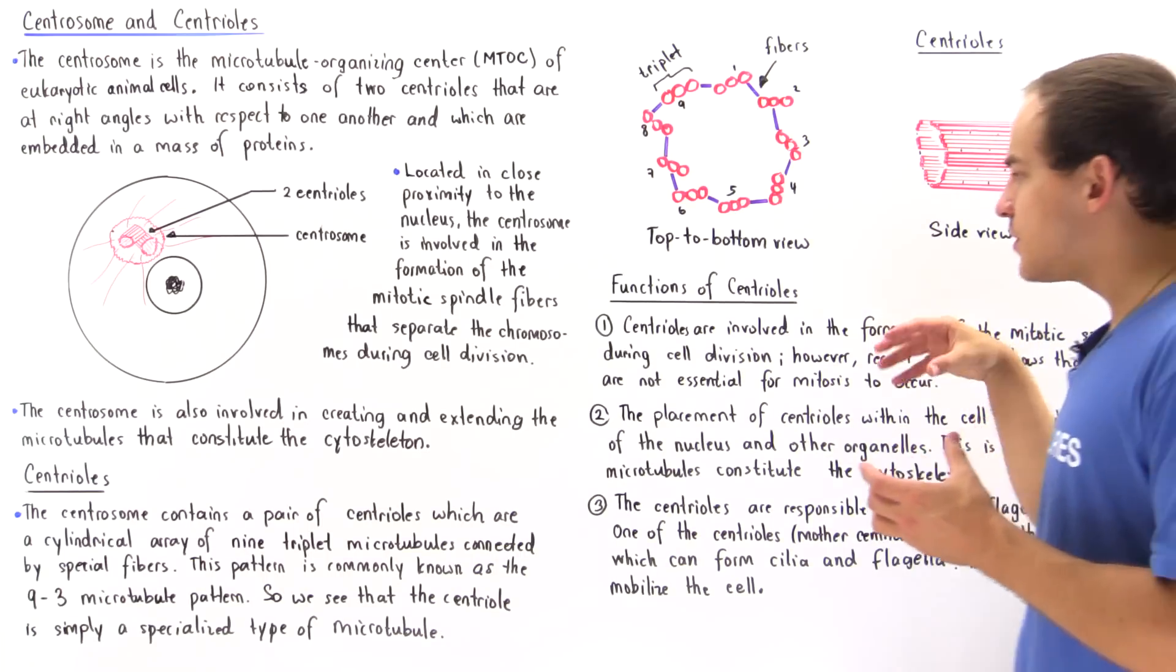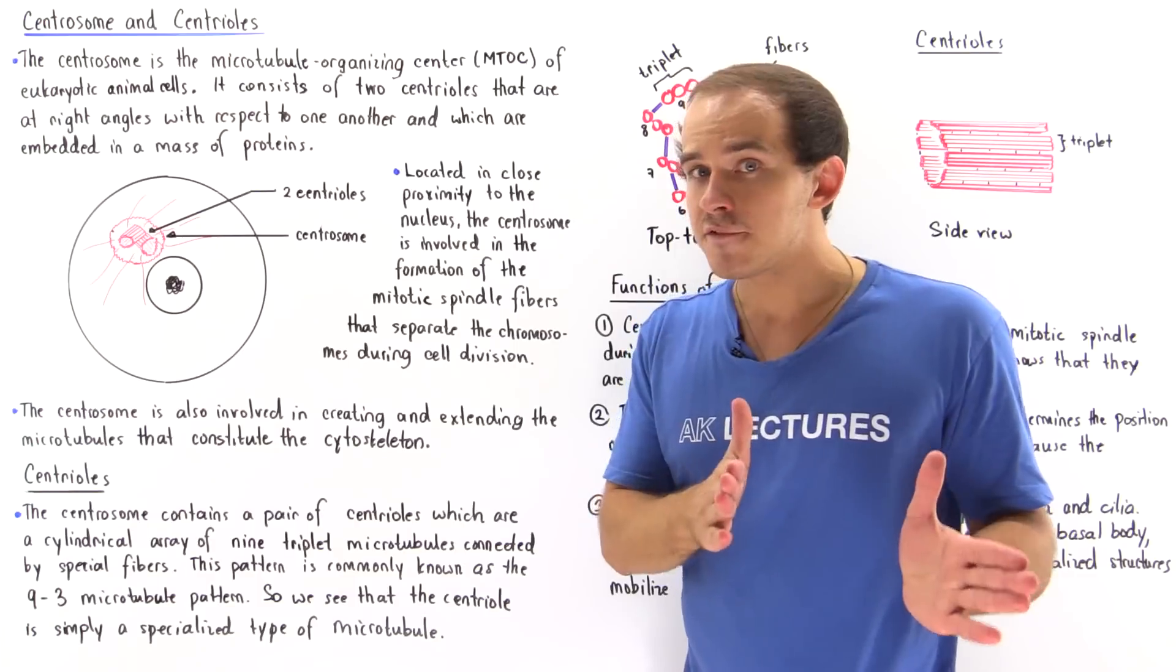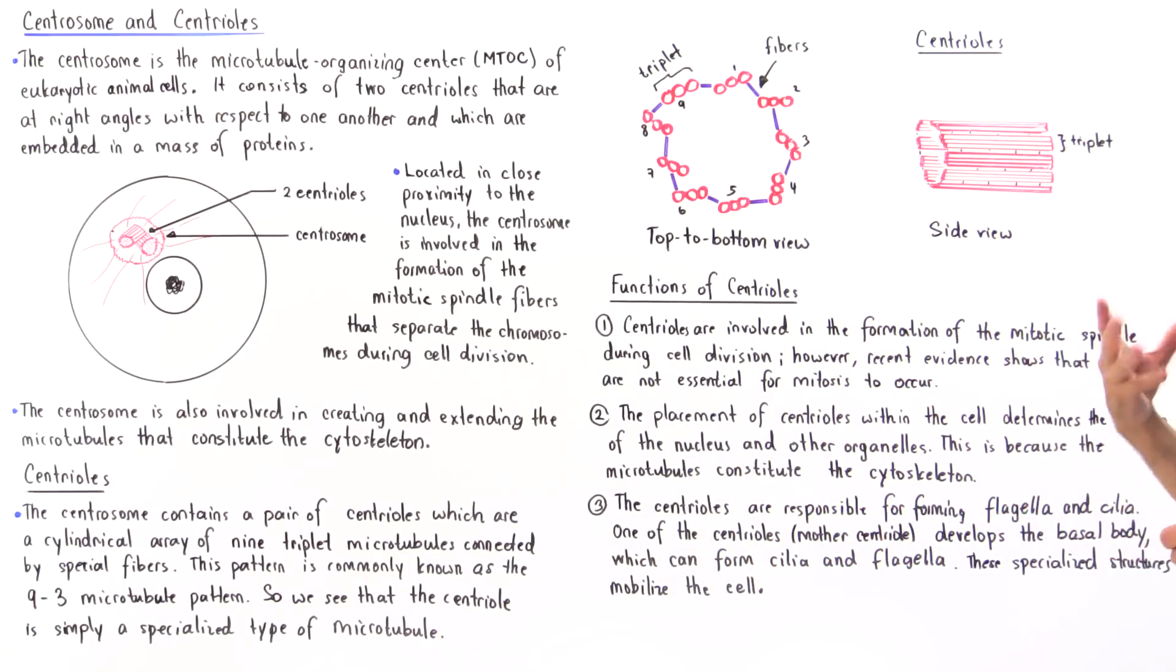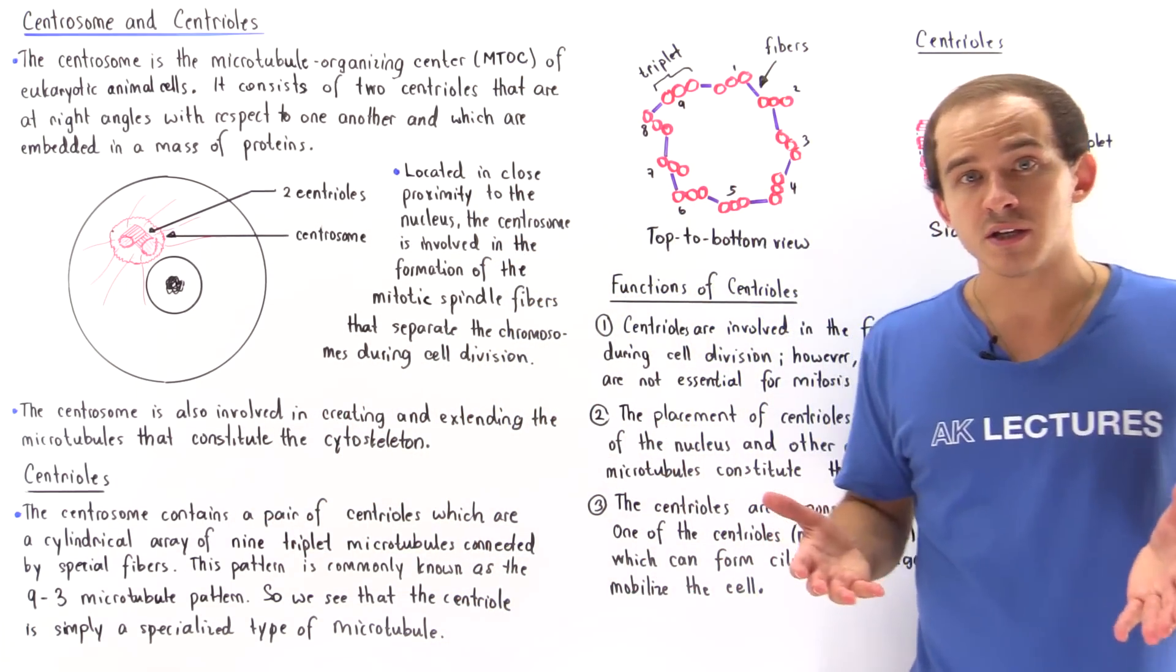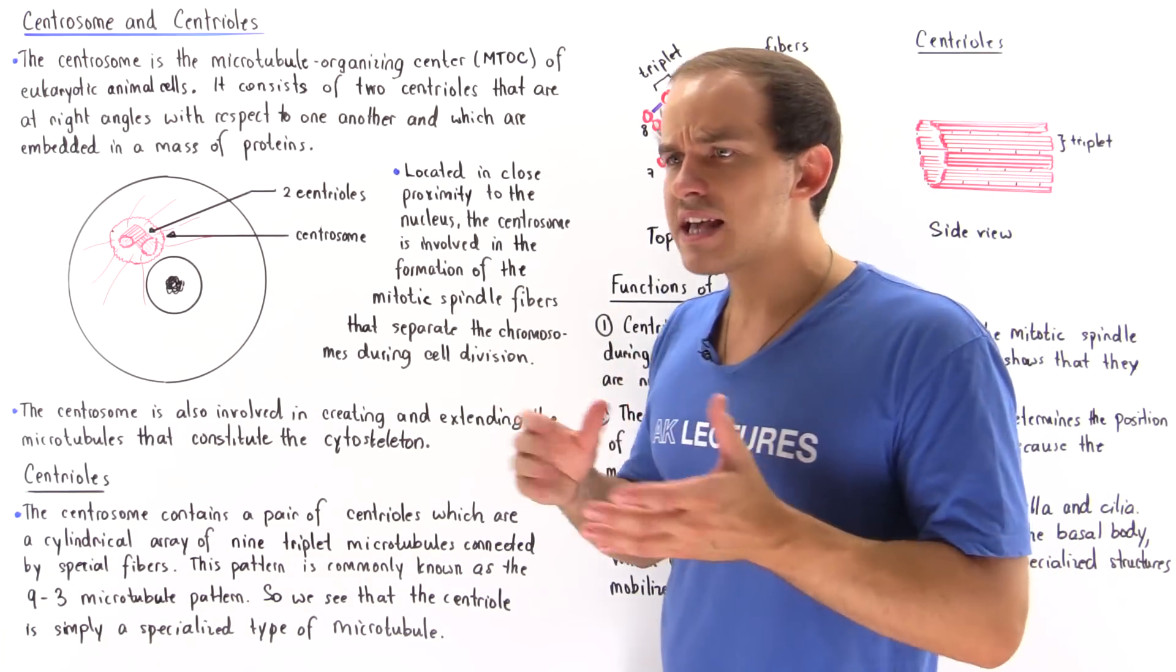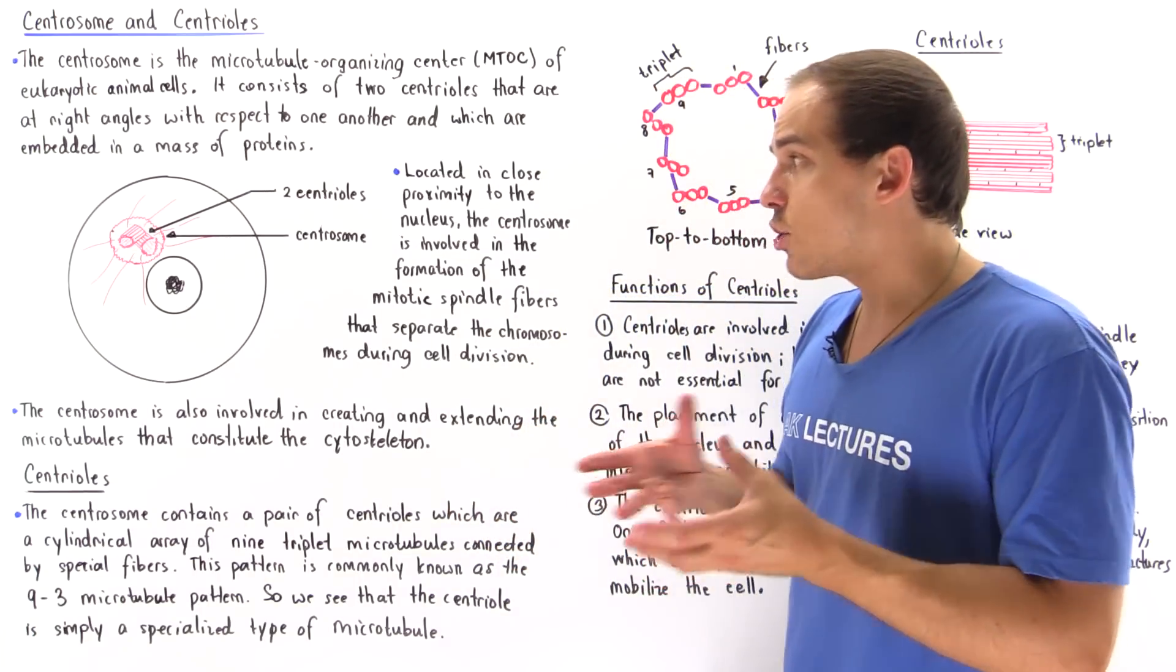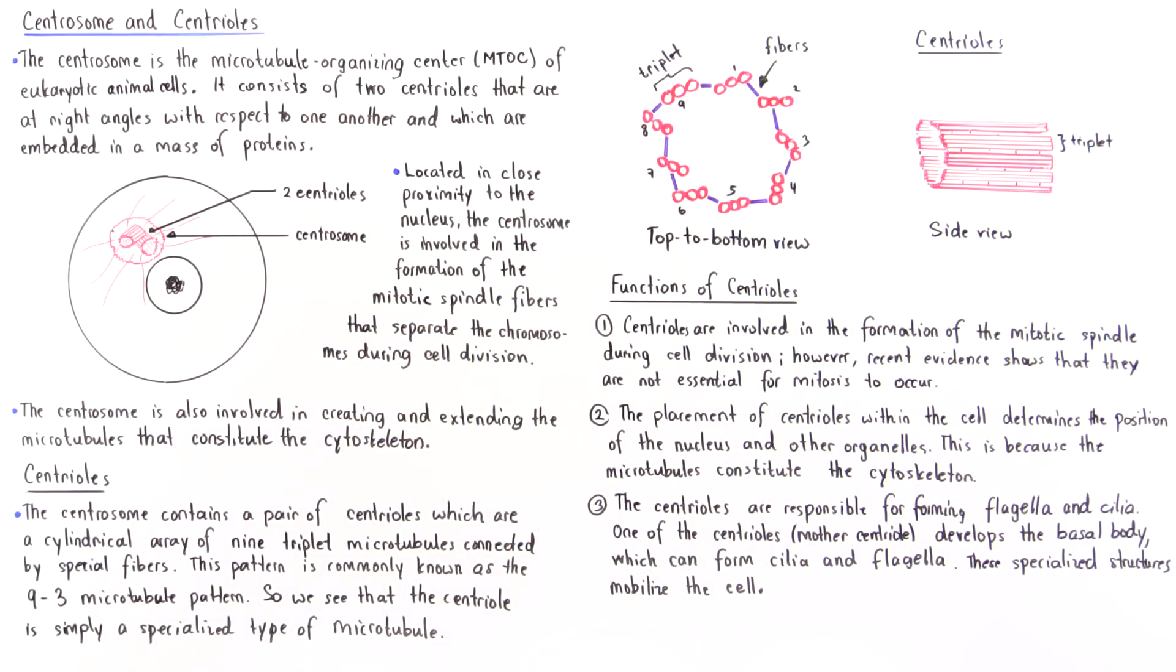Basically we can imagine that centrioles make our separation of chromosomes very efficient. However, they are not exactly necessary for mitosis to actually take place. What exactly is the second function of the centriole? The centriole is our region that extends and creates those microtubules, and microtubules compose our cytoskeleton. The cytoskeleton is basically responsible for arranging and organizing the organelles found inside our cell. We see that the placement of the centrioles within the cell determines the position and location of the nucleus as well as the other organelles inside our body.